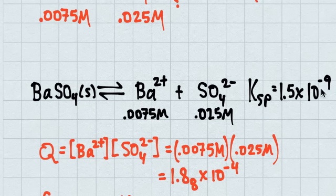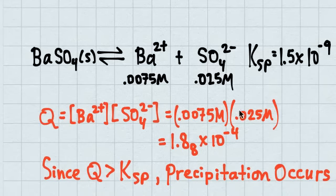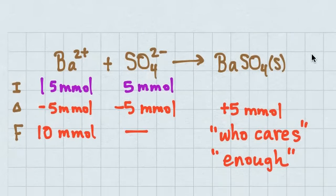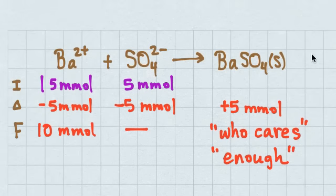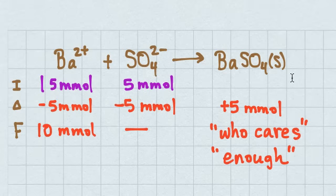Since Q is larger than KSP, this is too big and they'll go back this way to create more precipitation until these concentrations get low enough to equal KSP. By the time precipitation occurs, I had 5 millimoles of barium and 15 millimoles of sulfate. The 5 millimoles of barium will take 5 millimoles of sulfate to make 5 millimoles of barium sulfate, as long as I have enough solid in there to keep equilibrium established. This is an initial-change-final (ICF) table, and since the KSP constant is so small, the reverse constant would be on the order of 10¹⁰ — so I really want to form this barium sulfate.